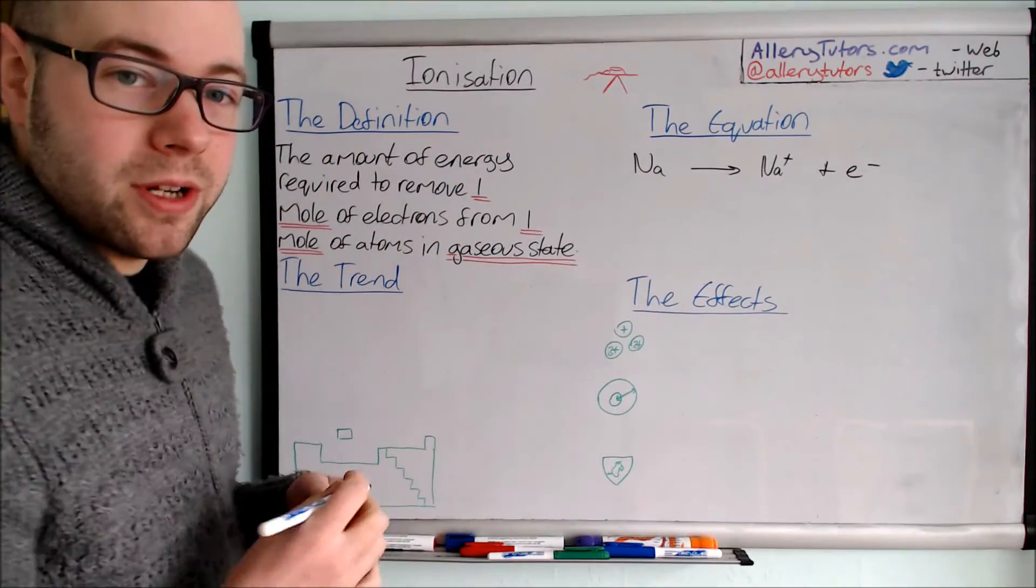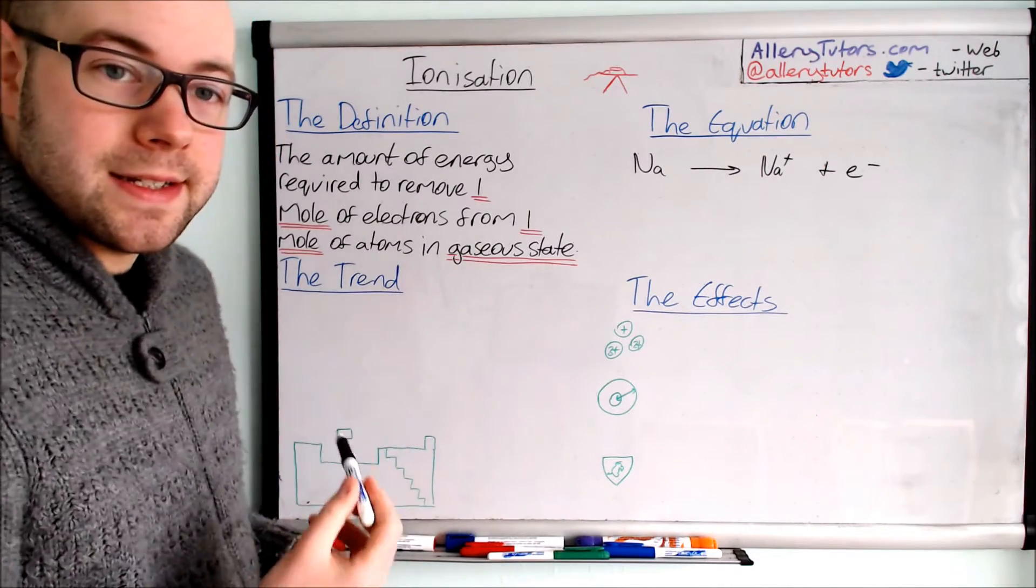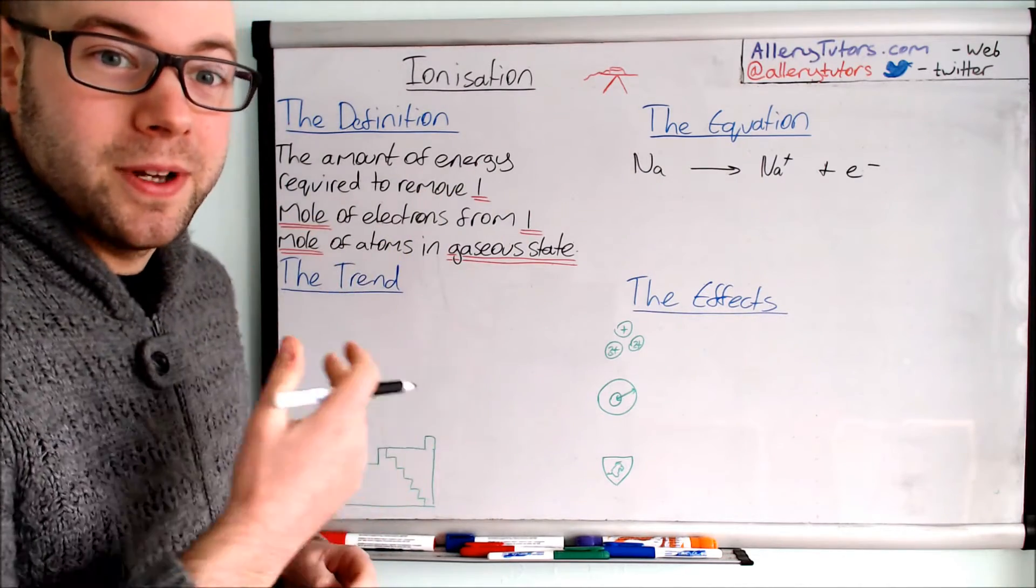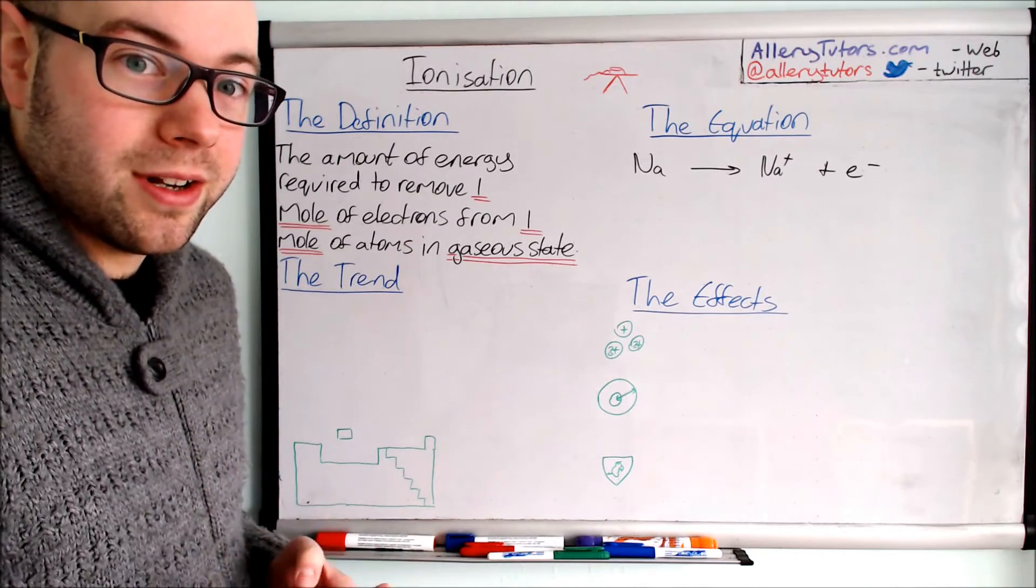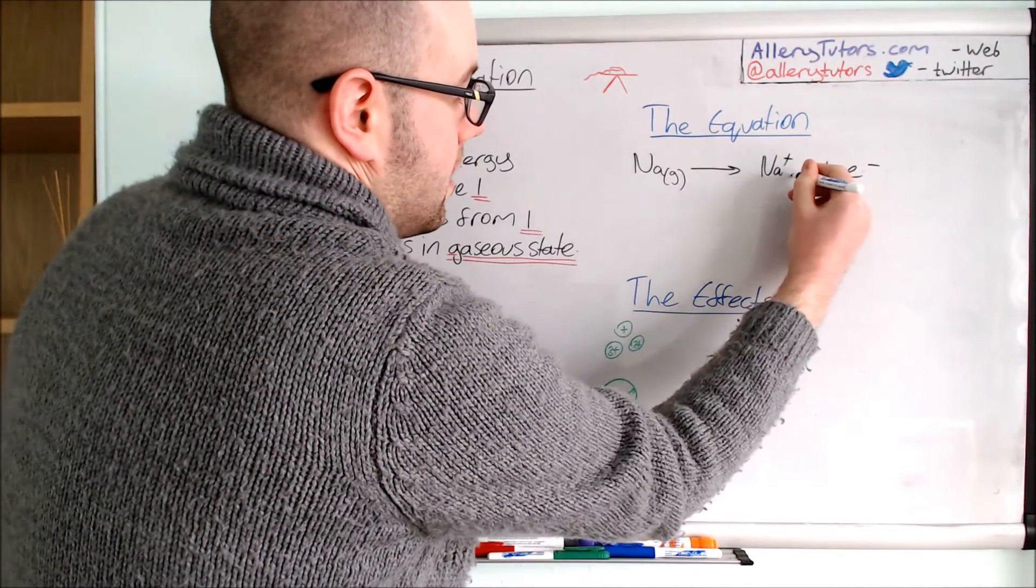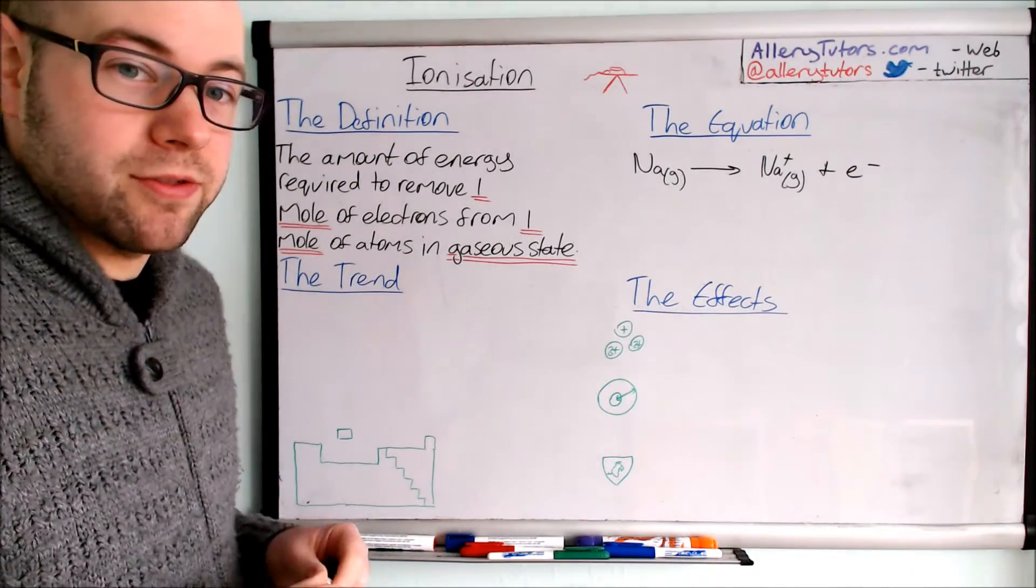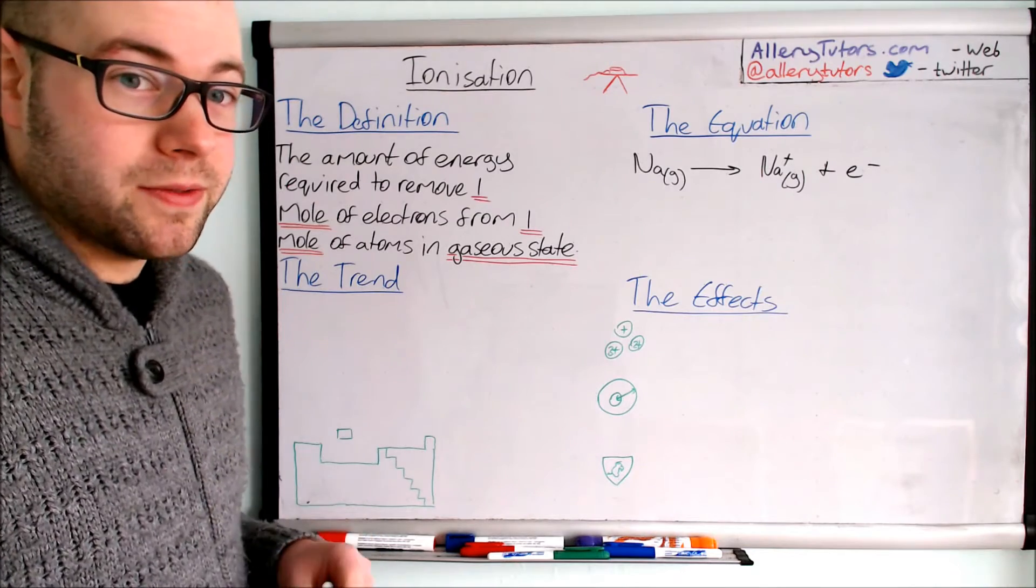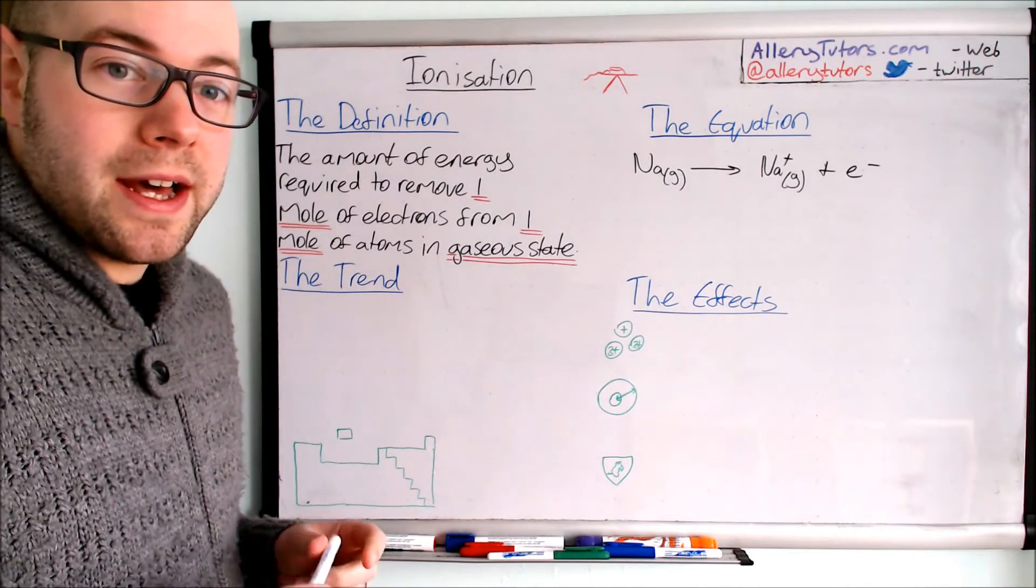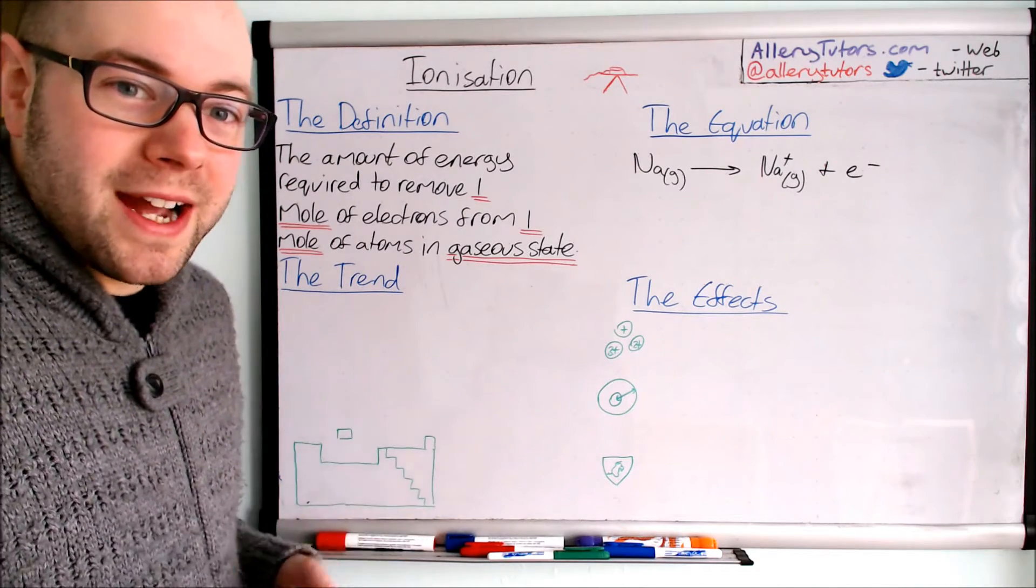This is exactly how the equation should be written, but there's one extra thing we need to consider which is atoms in the gaseous state. We need to add the gaseous state symbol to the end of these. Even though sodium at room temperature is clearly a solid, we have to label it as a gas. So whenever you write these equations you need to put gas on sodium and the Na+ ion. We don't need to put it on the electron though. That's really important because quite often you get two marks for this in the exam, one for writing the equation correctly and balanced, and the other for writing these state symbols.